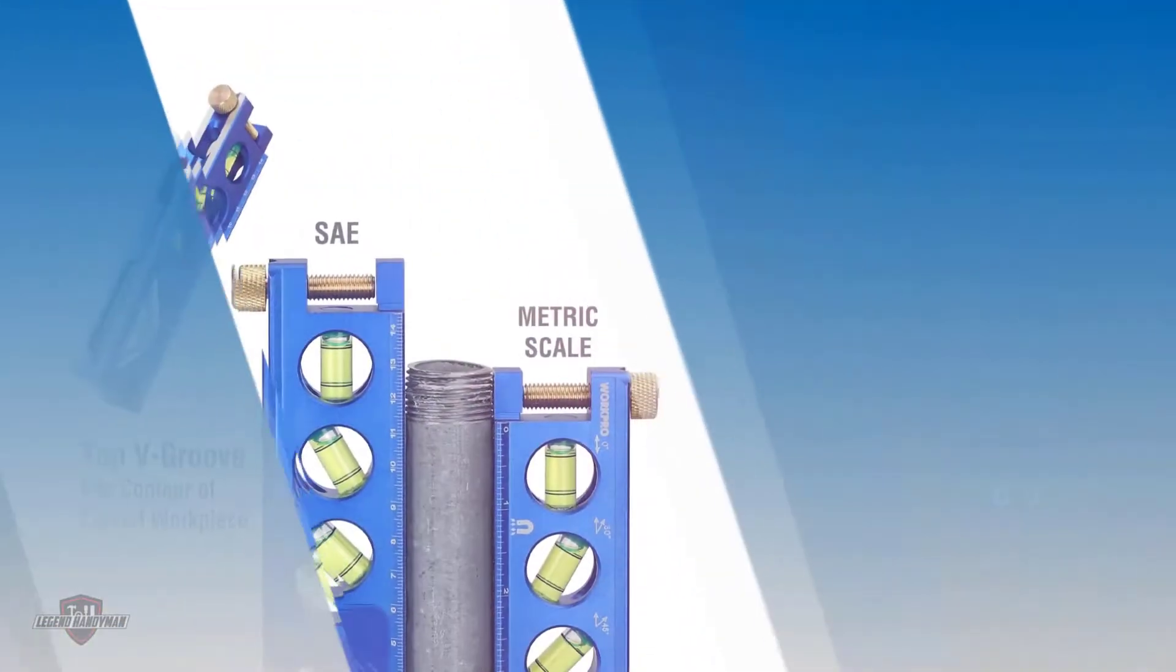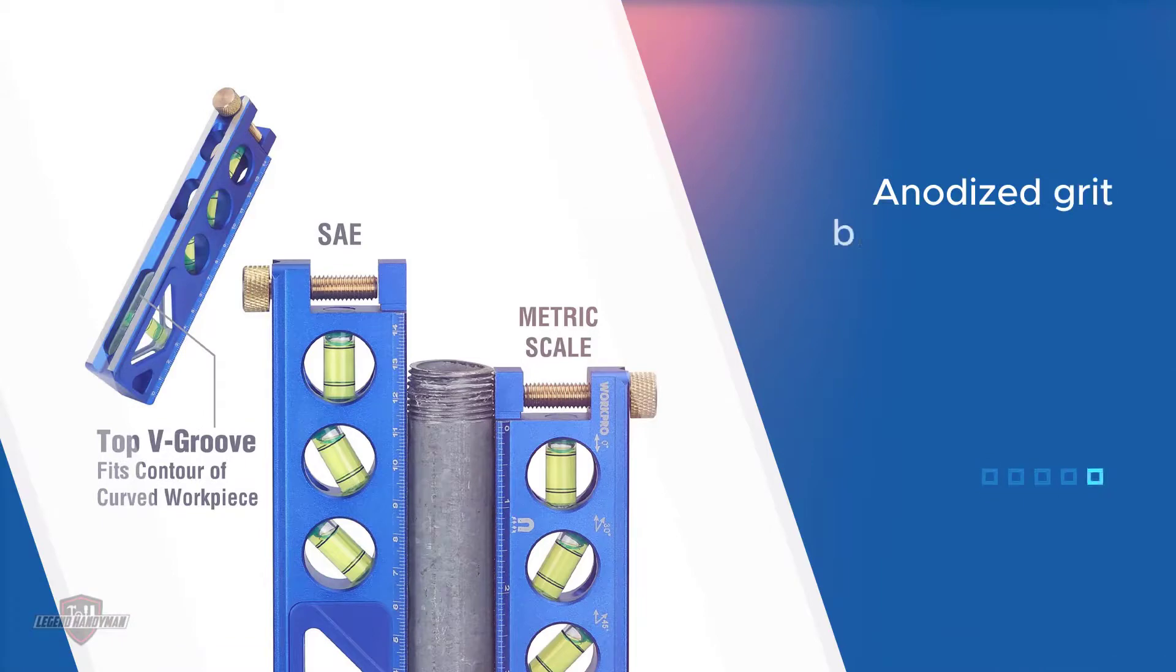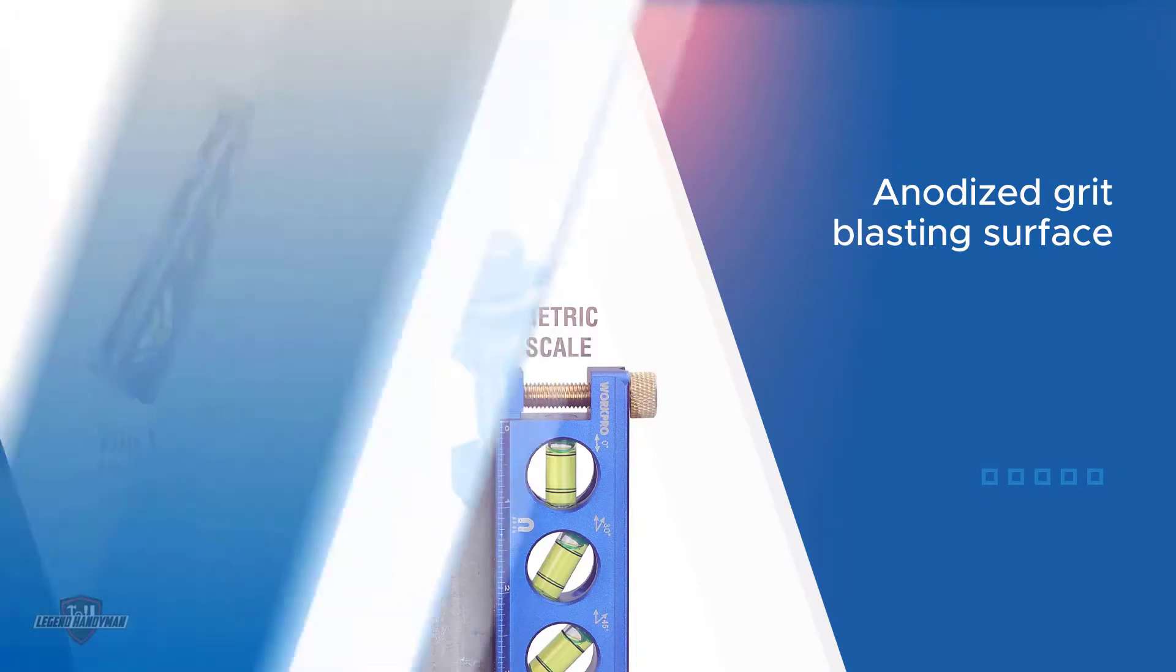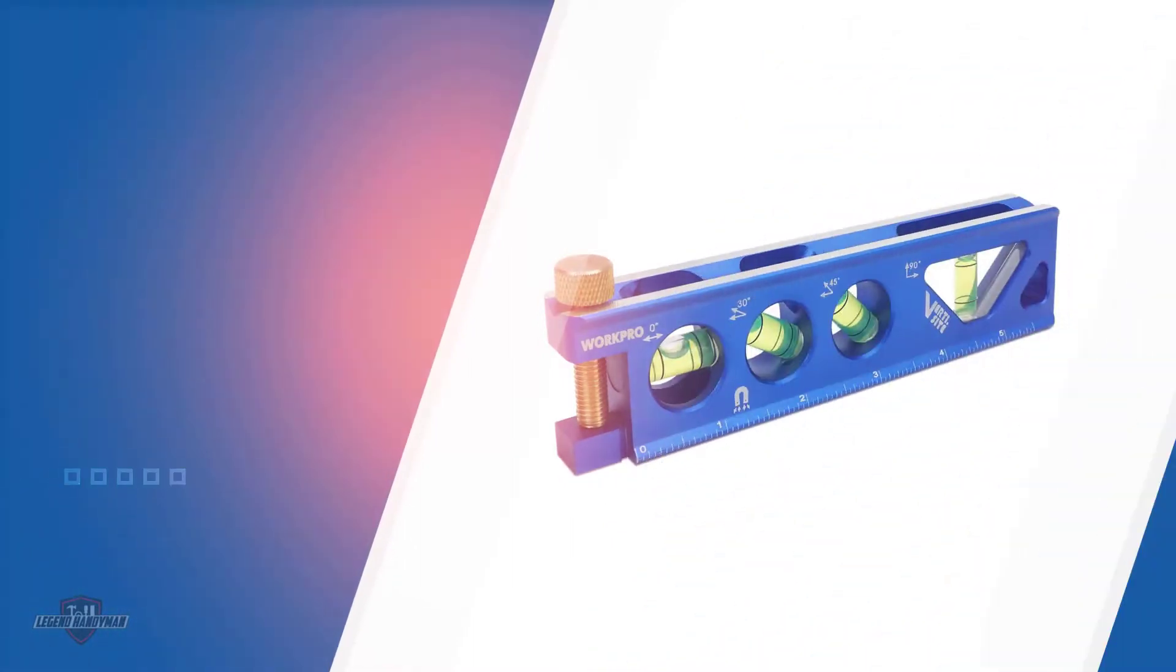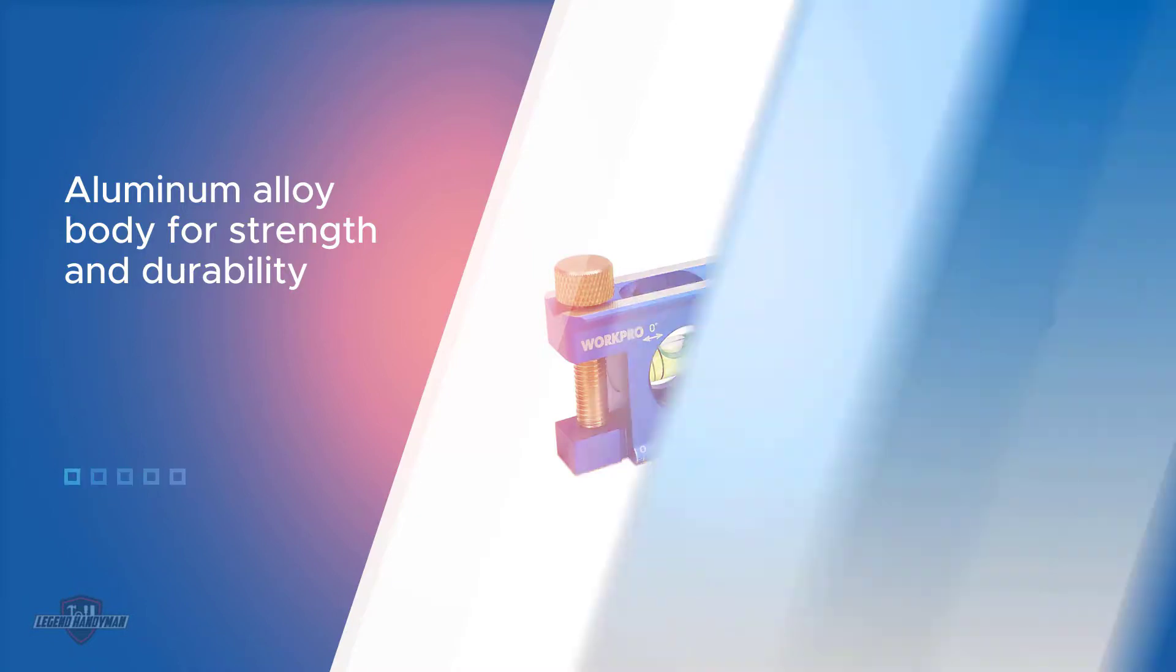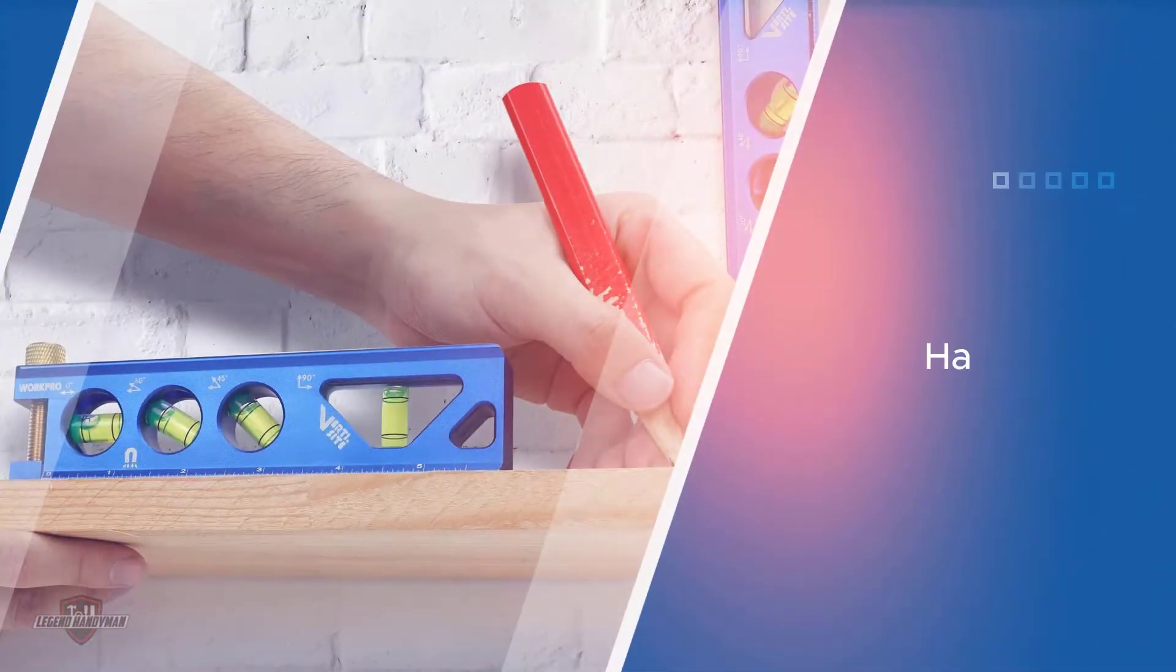This is where the thumbscrew enters. Its job is to attach the level with conduit to measure angles, specifically when the conduits are in bending transition. WorkPro ensures to appoint a thumbscrew on one side of the level. It enables secured and hands-free measuring adjustment faster than other levels.